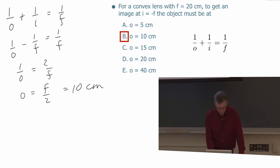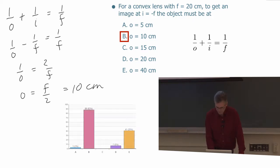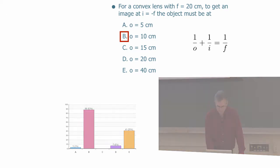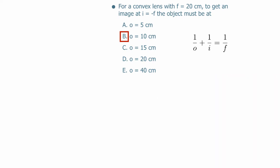Let's see how you did. Most of you chose B — good. And some of you somehow got E, 40 centimeters, but it could just be an algebraic thing. Very good.